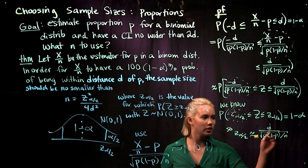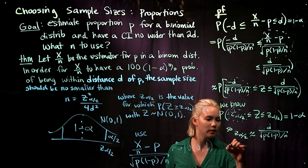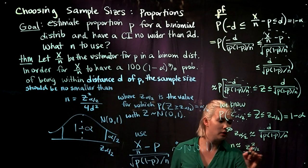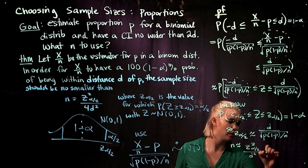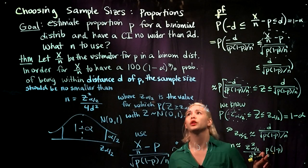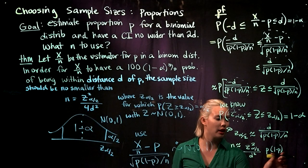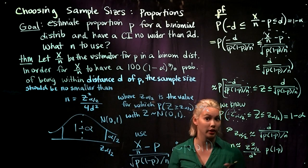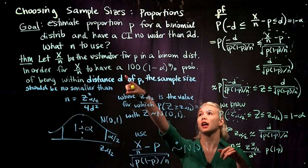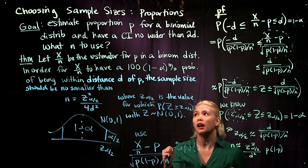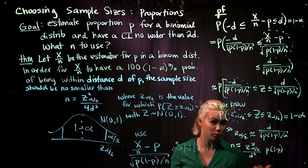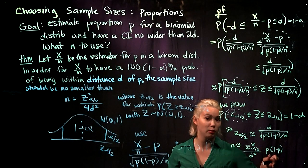Rearranging and solving for N, we get that N is approximately Z(α/2) squared divided by D squared, times P times (1−P). Of course, the problem is we don't know P — we're looking for P. So we use the worst-case scenario: to make P times (1−P) as large as possible, we set P equal to 0.5, which maximizes P(1−P) as can be verified with calculus.